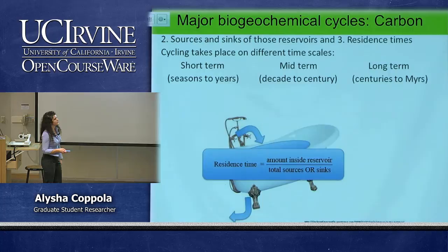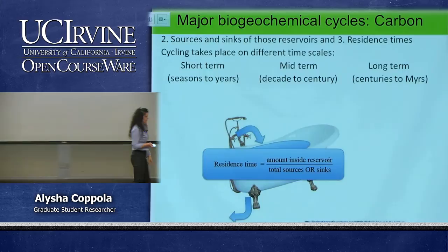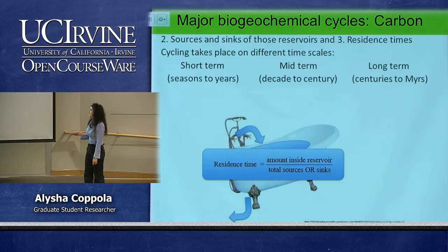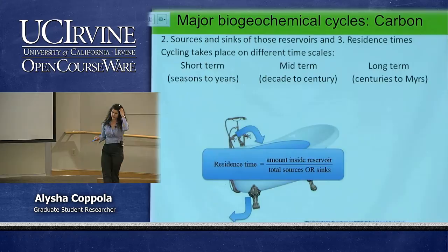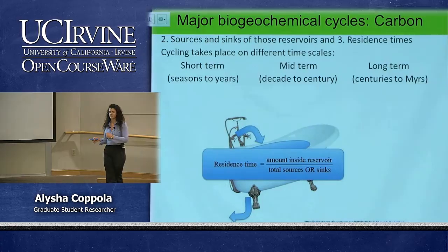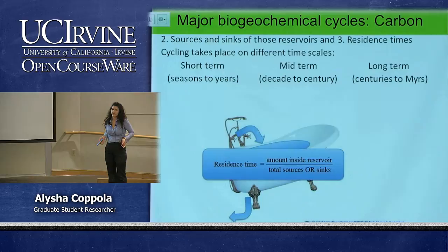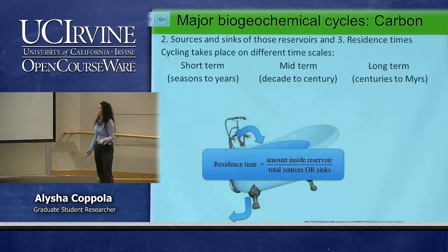Residence time tells us how long carbon stays in a given reservoir — calculated as the amount inside the reservoir divided by the total sources or sinks. Like a tub: how much water is in it and how much is being added or removed. Carbon cycles on different timescales depending on the reservoir. Short term is seasons to years; mid term is decades to centuries; long term is centuries to millions of years.